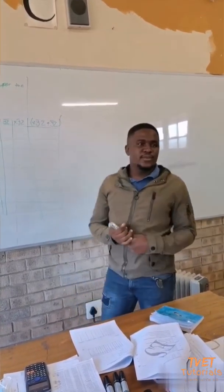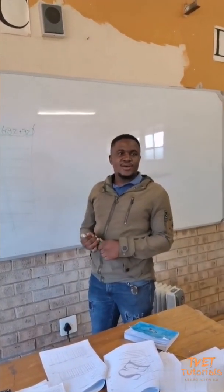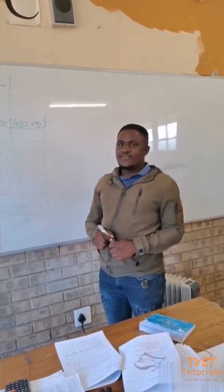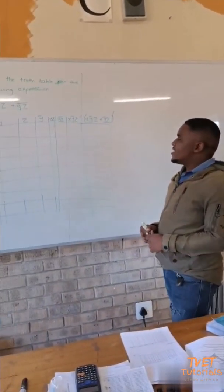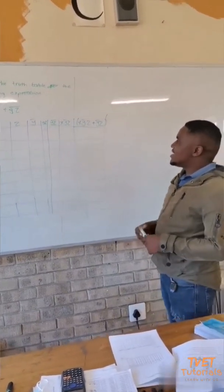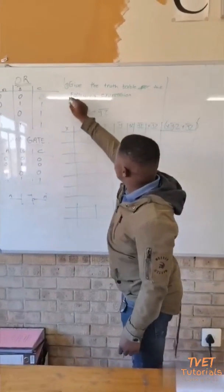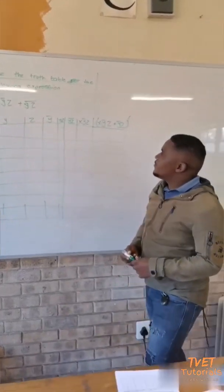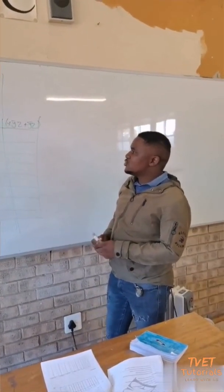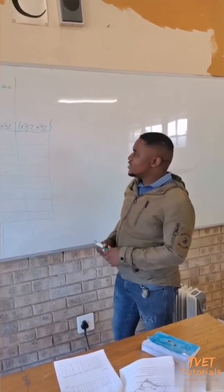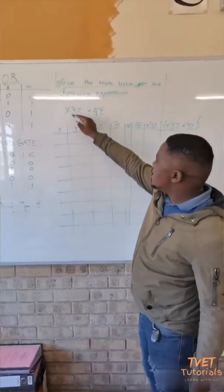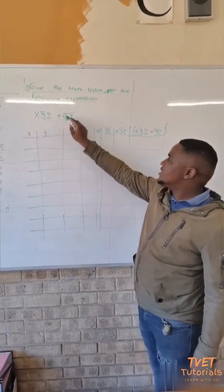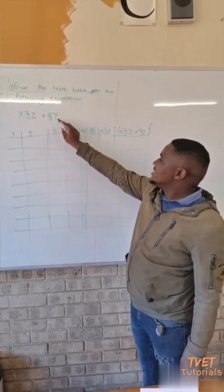We will be looking at how to construct a truth table. For example, if we are given the following expression: give the truth table for the following expression. The expression we are having is X, Y, Z plus Y, Z.